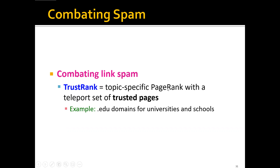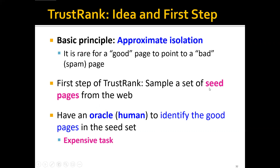TrustRank is essentially equivalent to running a topic-specific PageRank with a teleport set of only trusted pages. For example, we can use all the .edu domains for universities and schools as the teleport set of trusted pages. The basic principle behind this is approximate isolation, which says that it's rare for a good page to point to a bad or spam page.